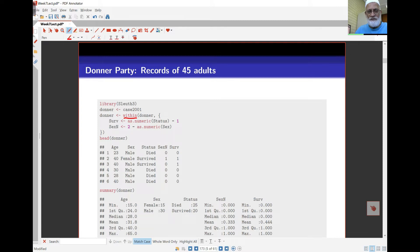Within actually modifies the data frame. We've got within(Donner): surv is a new variable we're creating, which is as.numeric(Status). Sex is also a new variable, which is 2 minus as.numeric(Sex). You can look to see what this does below if you look at the data.